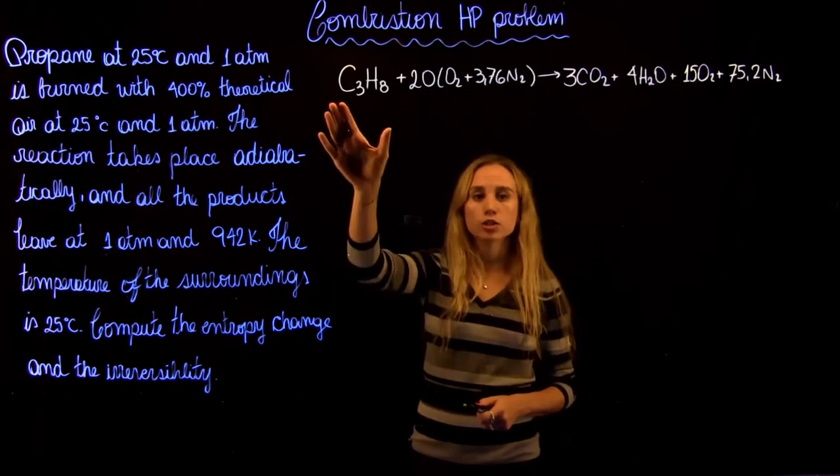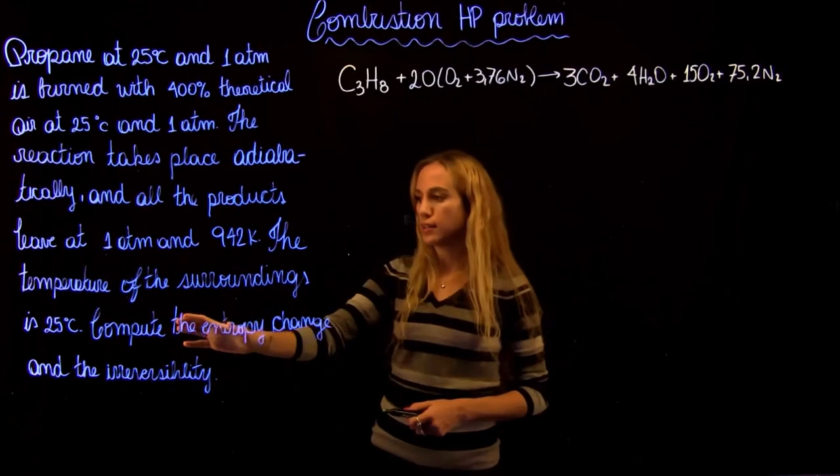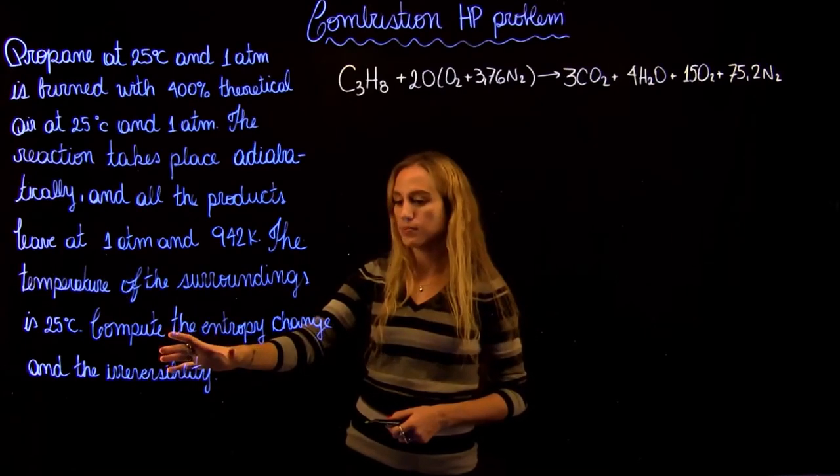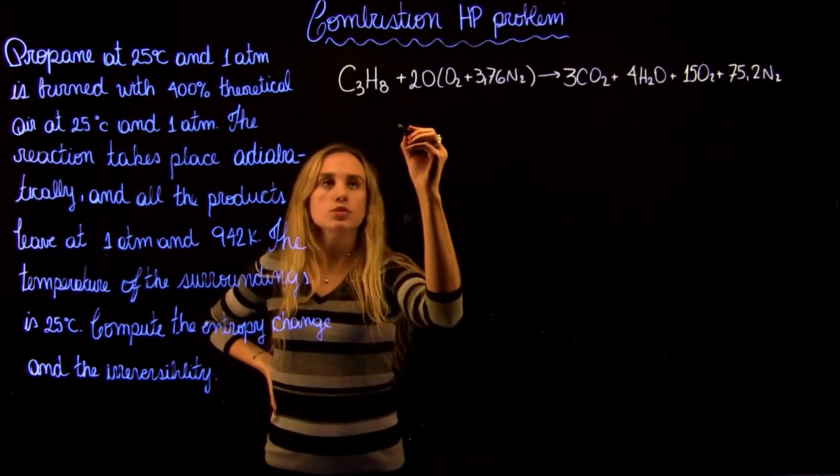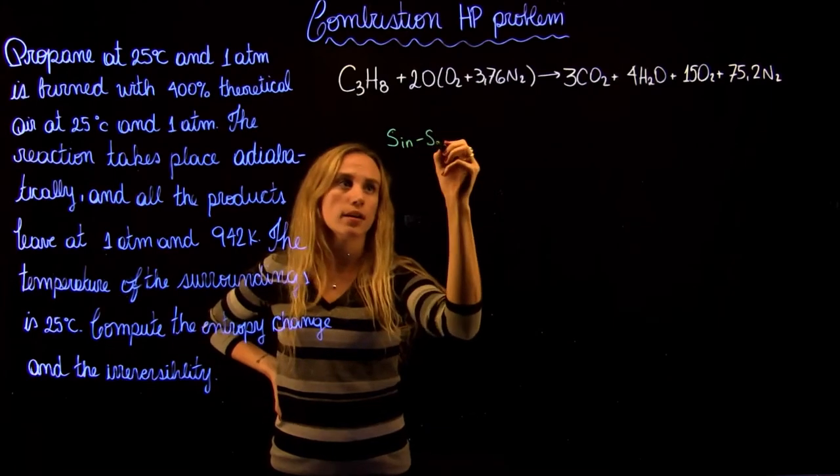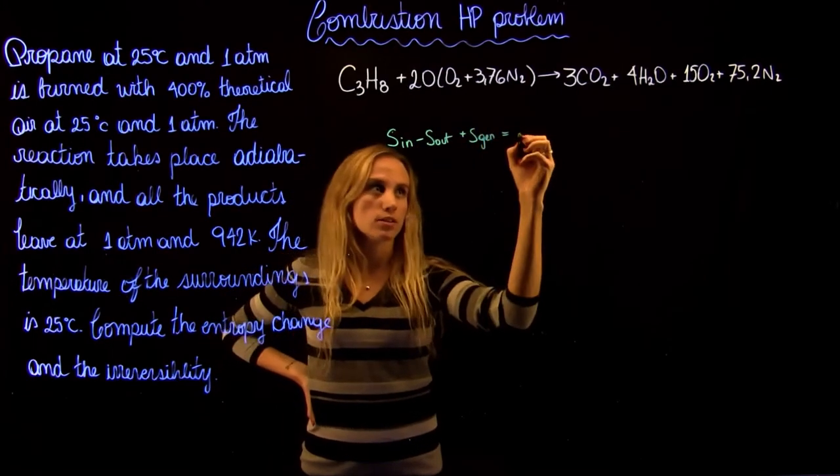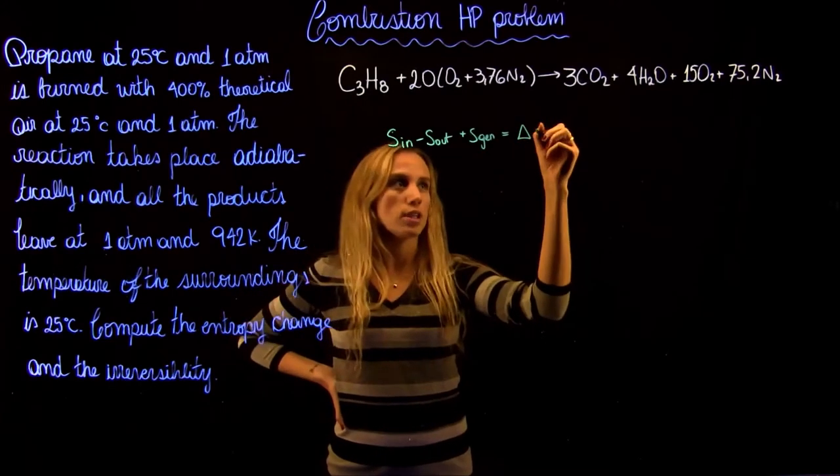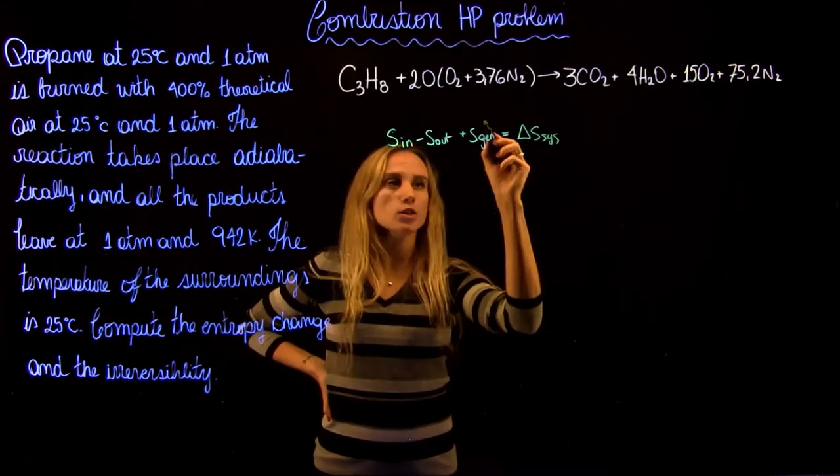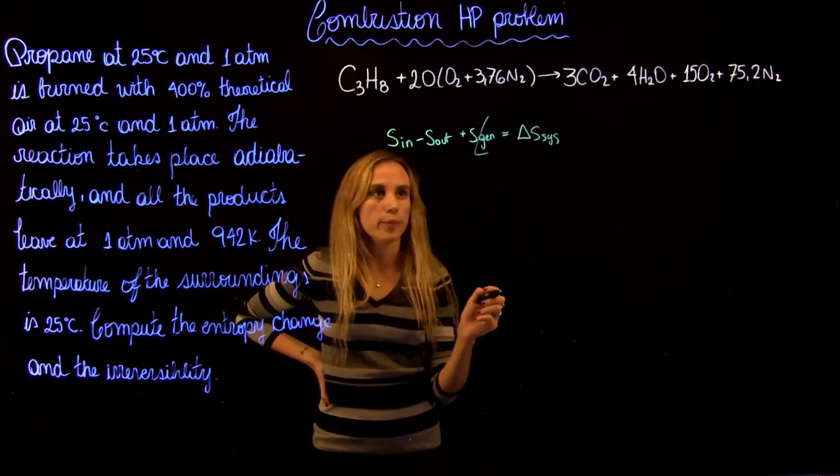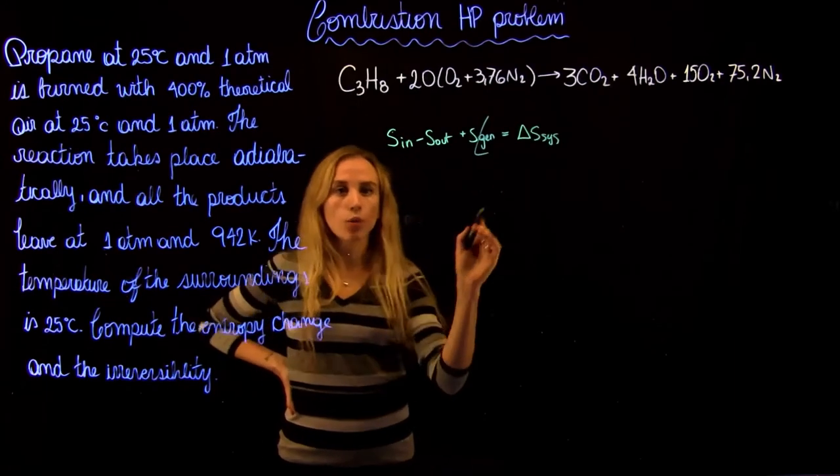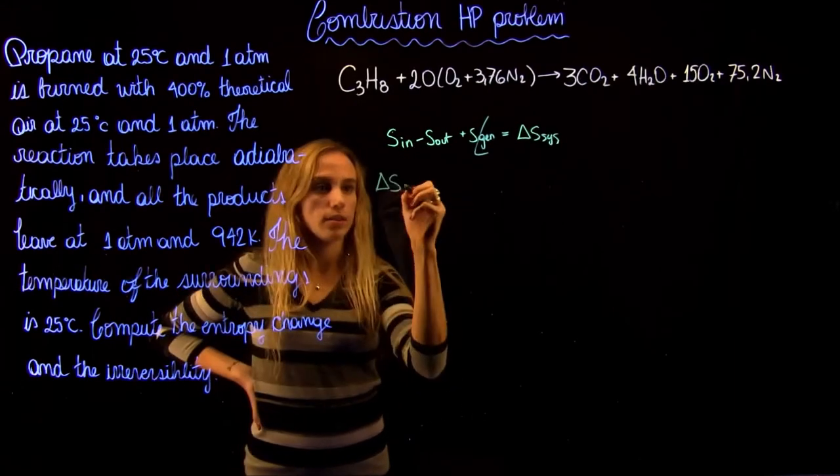Now that we have the combustion reaction, let's find the entropy balance in order to find the entropy change. So we know that the net entropy plus the entropy generation is going to be equal to the change in entropy of the system. In our case, we don't have anything generating entropy.